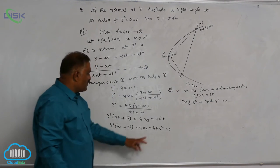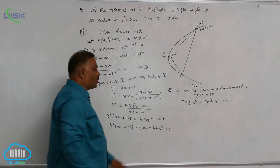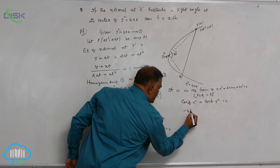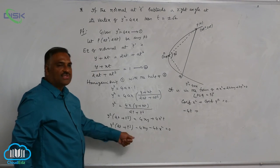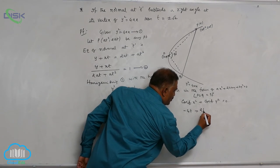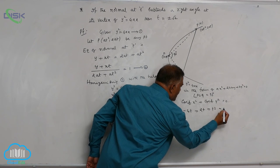What is coefficient of x square here? Minus 4t plus coefficient of y square is 2t plus t cubed. So, minus 4t plus 2t plus t cubed is equal to 0.